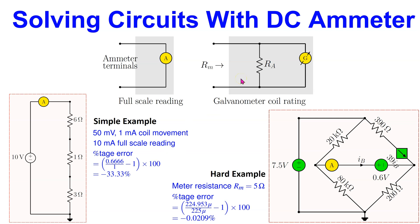Hello everyone. In this video, we will look at how to expertly solve circuits with DC ammeter. We will discuss how to construct a DC analog ammeter using a galvanometer, given galvanometer coil ratings and the desired full-scale reading. We will also see how to work out the effective resistance of an ammeter and use it to calculate the percentage error in the measured current.